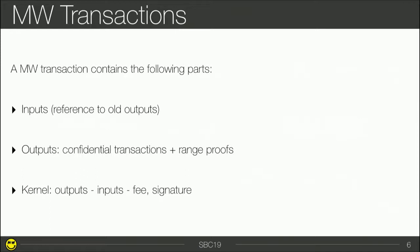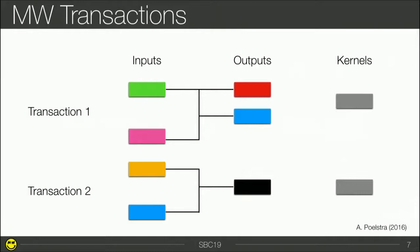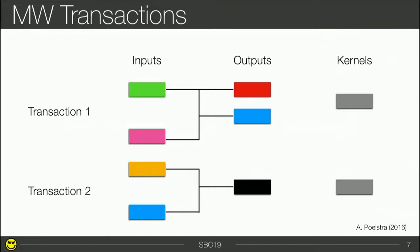When you verify a MimbleWimble transaction, you verify the signature and also verify that outputs minus inputs equals kernel. This gives us a really nice property, because inputs, outputs, and kernels are just random numbers. So you can have two transactions — for example, transaction one has two inputs and two outputs and a kernel; transaction two has two inputs and one output, and it spends an output from transaction one. You can sum those two transactions and the equation still holds. You can also remove the spent output from the blockchain, and the equation outputs minus inputs still equals kernel.